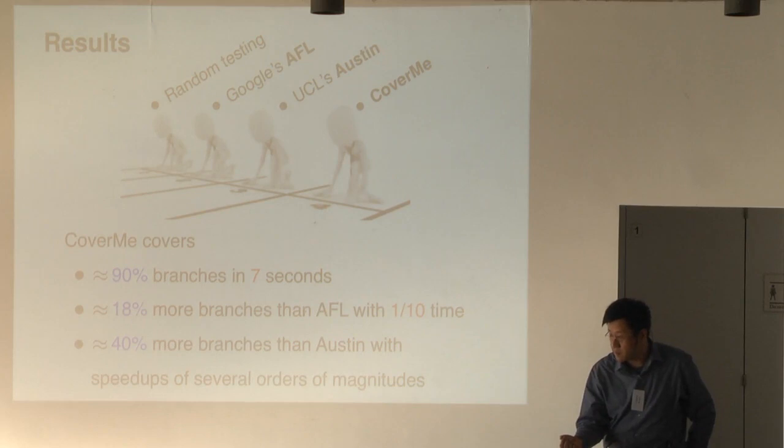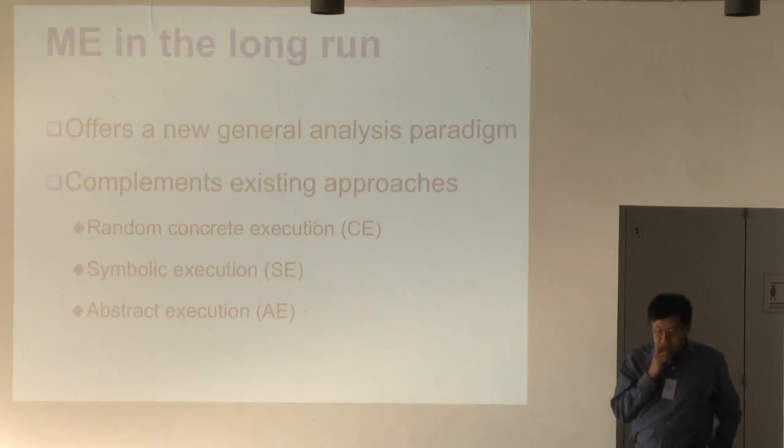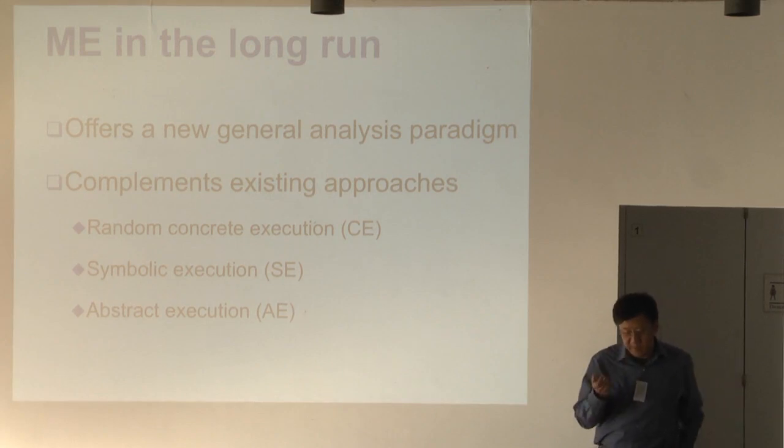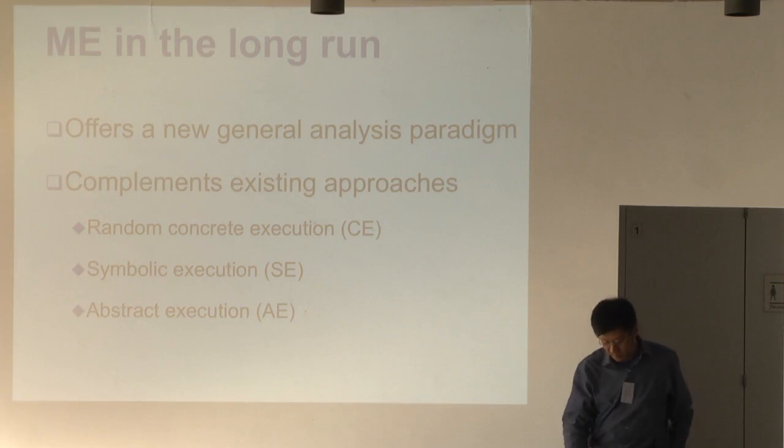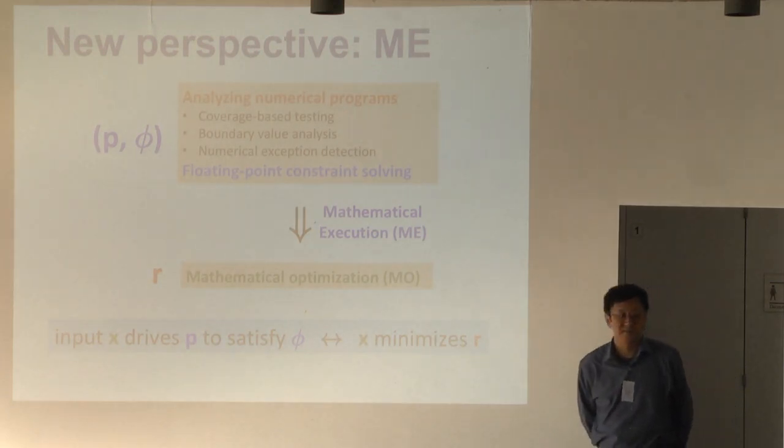I went really fast. In my view, this mathematical execution idea is a very simple concept, but I think it's a very general concept. The hope is why this term ME, because we have random program execution, random testing, there's symbolic execution SE, and also abstract interpretation, abstract execution. So, I hope this one is going to offer some really interesting alternatives or complement these existing tools. With that, I'm happy to answer some questions.